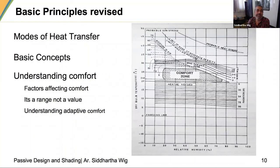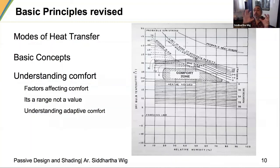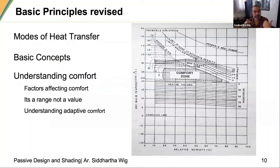It is also important to look at adaptive comfort — Nicholls did a lot of work in this field. It is not a uniform value or range; what clothes we are wearing, what activity we are engaged in, whether we have personal controls over our microenvironment — all go a long way in determining our feeling of comfort. It is not just temperature but also the freshness of air in the space.